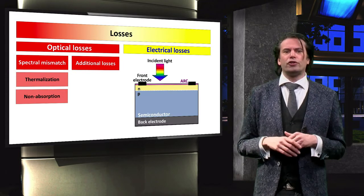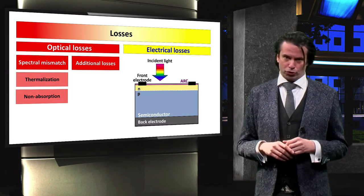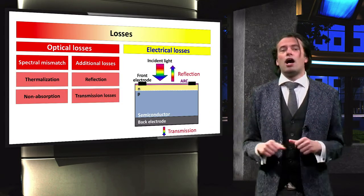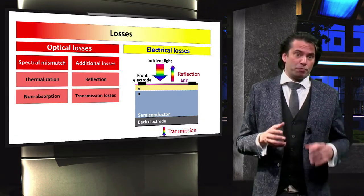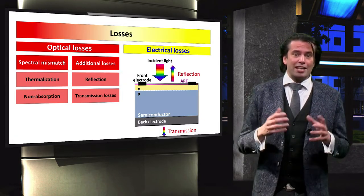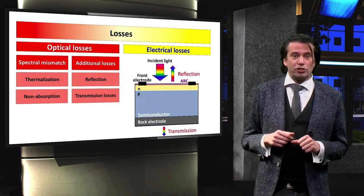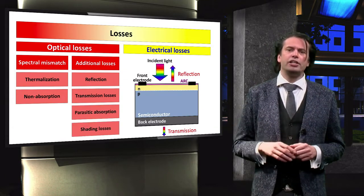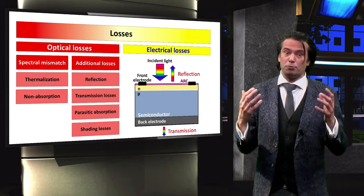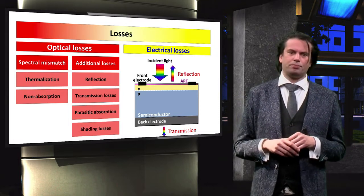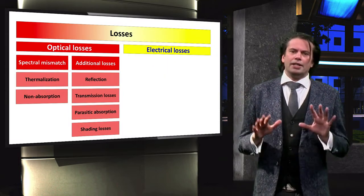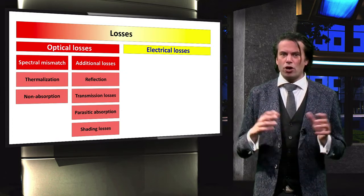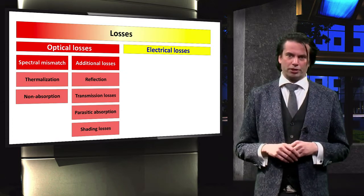Additional losses further limit the optical performance of a solar cell. Among these are the reflection of light from the front surface of a solar cell and the transmission of light from the cell that is not absorbed. Additionally, we learn about parasitic absorption and shading losses. These additional optical losses and spectral mismatch losses together make up the optical losses.